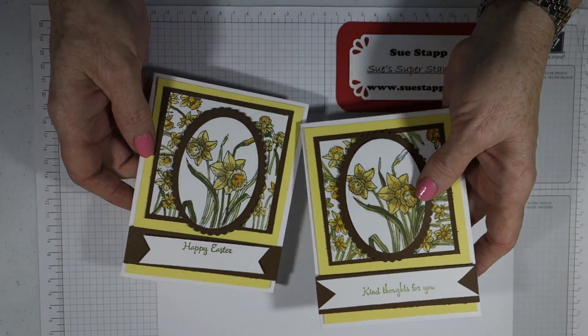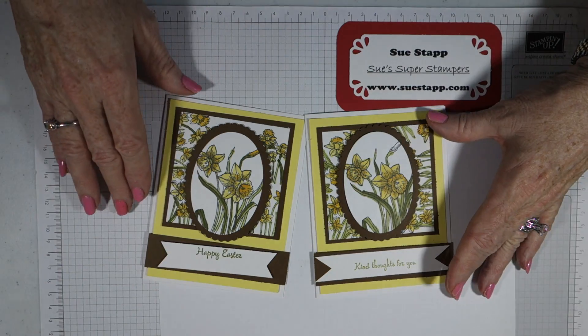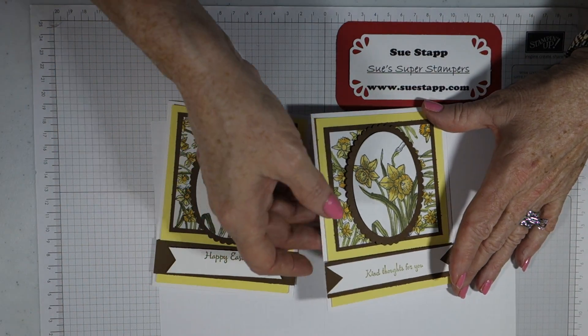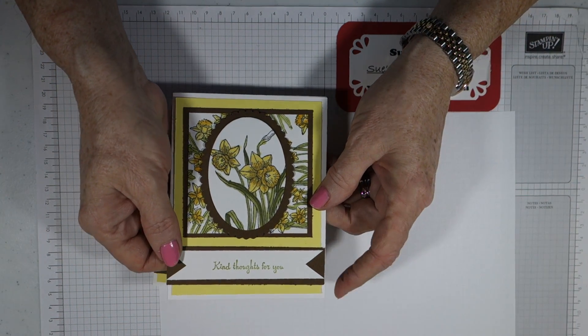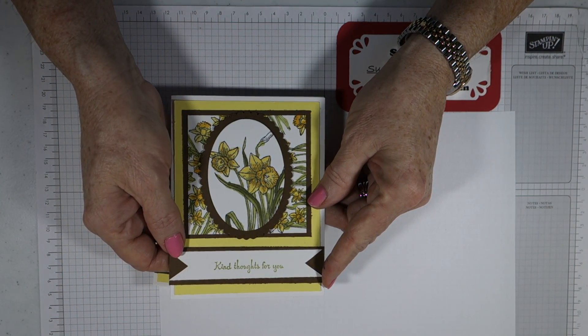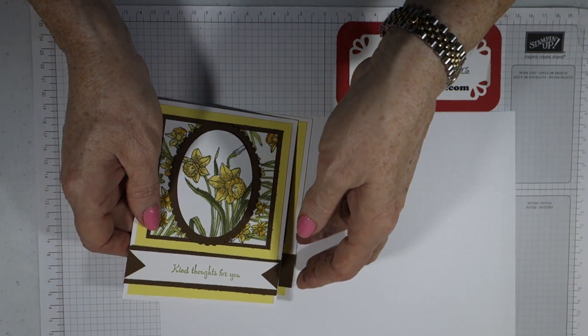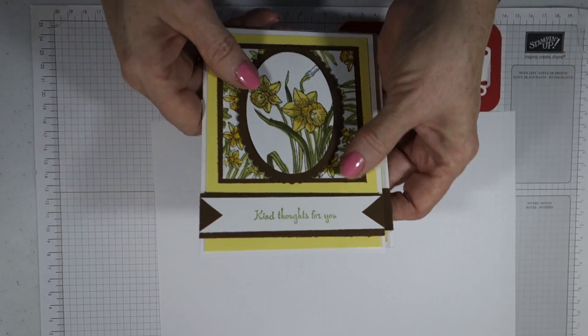This is an A2 size base card, and we're using the white base this time. We have quite a bit of color on here, so I thought the white gave it that background to really make it pop. Now I did this one on Easter, and this is the first one I did. I did the sentiment that said kind thoughts for you, and I think that would be nice to send a friend anytime.